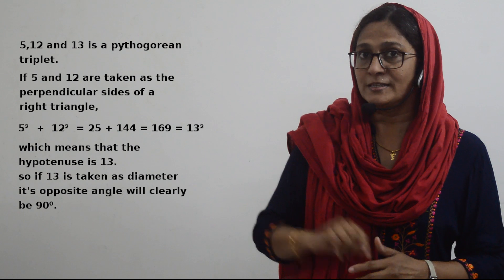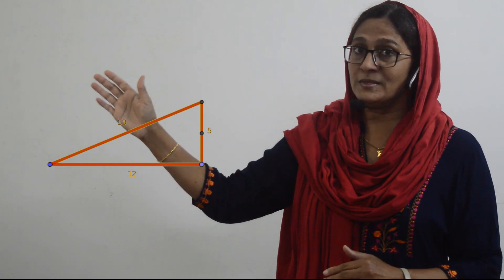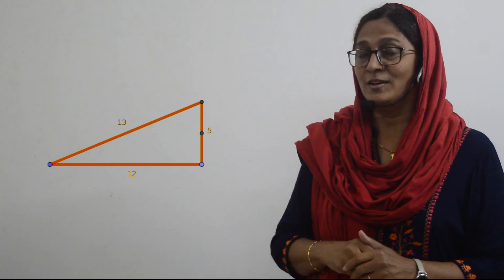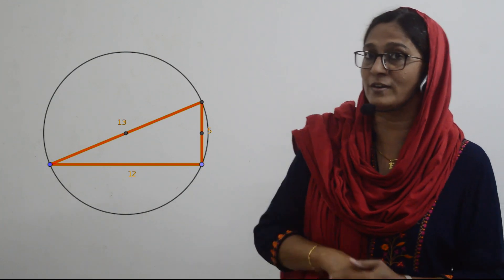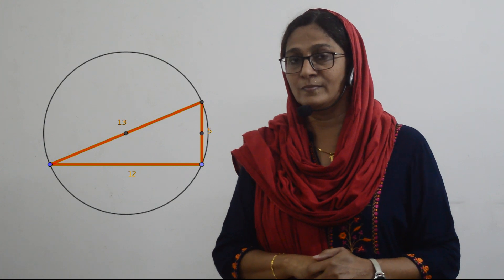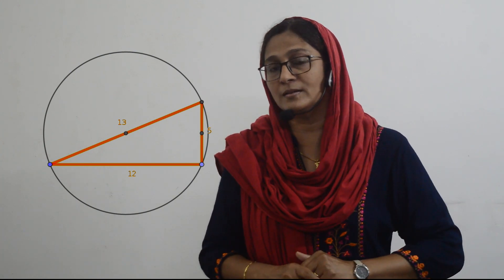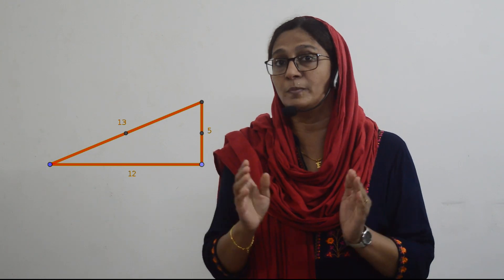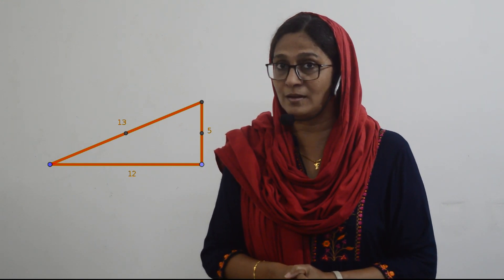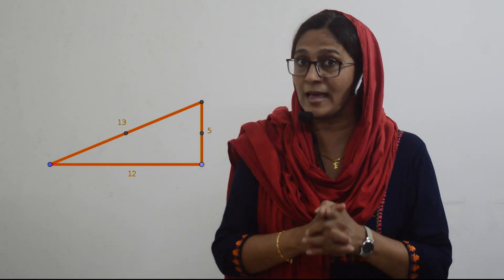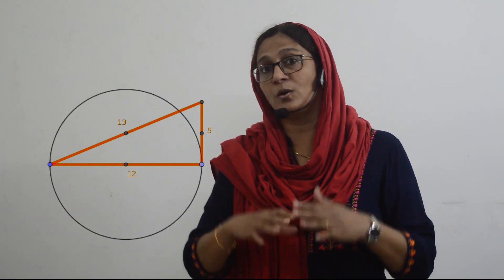Let us first consider taking 13 cm as the diameter. Since 13 is the hypotenuse, the opposite angle is the right angle, so the third vertex will be on the circle. In a right triangle, one angle is 90 degrees, which means the other two angles sum to 90 degrees and are each less than 90 degrees. So whether you take 5 cm or 12 cm as diameter, the third angle will be less than 90 degrees, meaning the third vertex will be outside the circle.